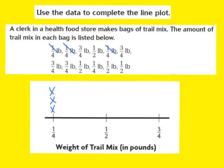Here's another 1/4 pound — that makes 4. I'll cross that one off and place another X in my line plot. In the data set, there are 1, 2, 3, 4 one-fourth pounds, and in my line plot I now have 1, 2, 3, 4 X's to represent those four 1/4 pound bags.